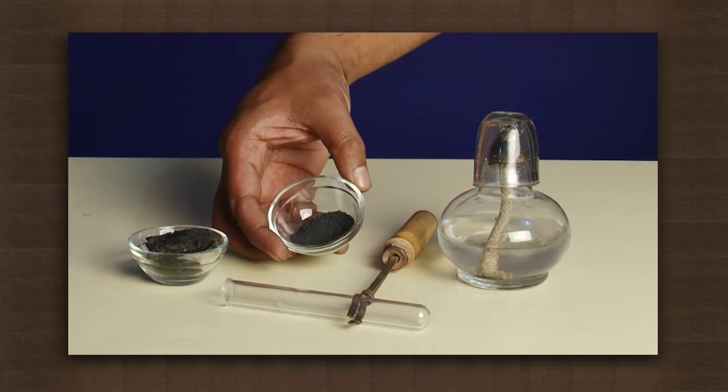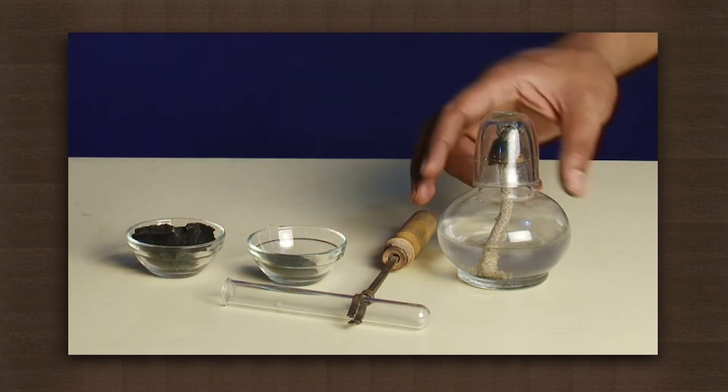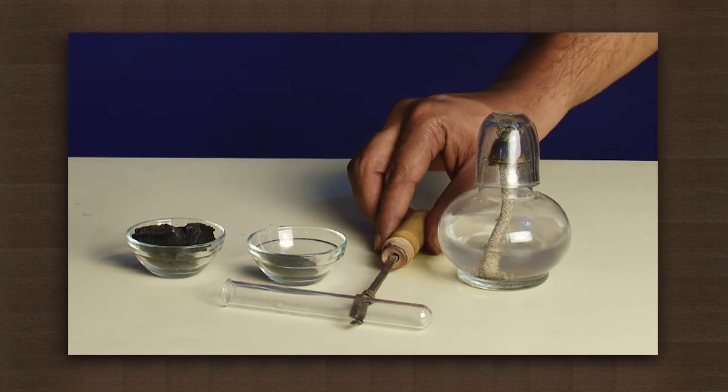Let us extract a metal from its metal oxide. For this we need copper oxide, charcoal, a burner and a test tube on a clamp.